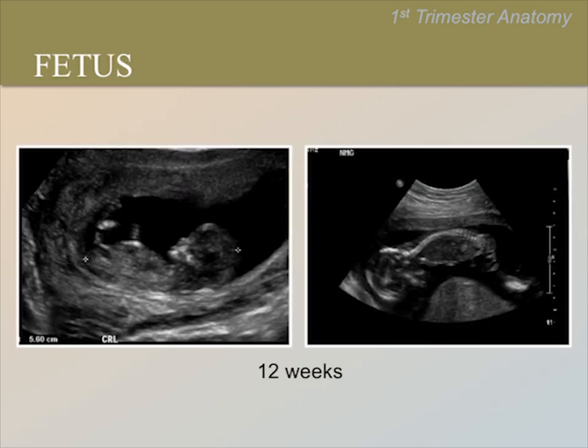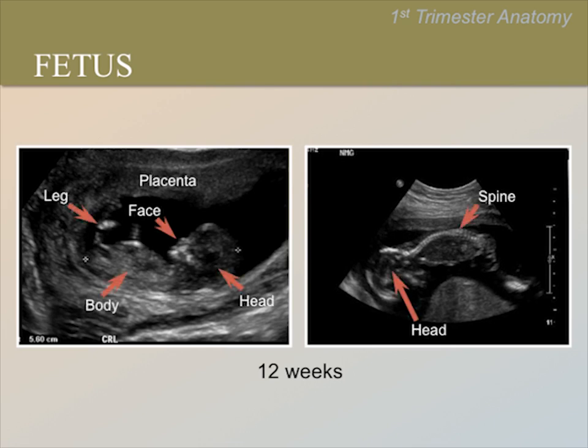Now we can identify the face, head, body, and legs. Please pause the video now to identify these structures. Here we have labeled the structures to make them more obvious. Note the placement of the calipers in the left image that measure the crown rump length. This image is taken at 12 weeks gestation.